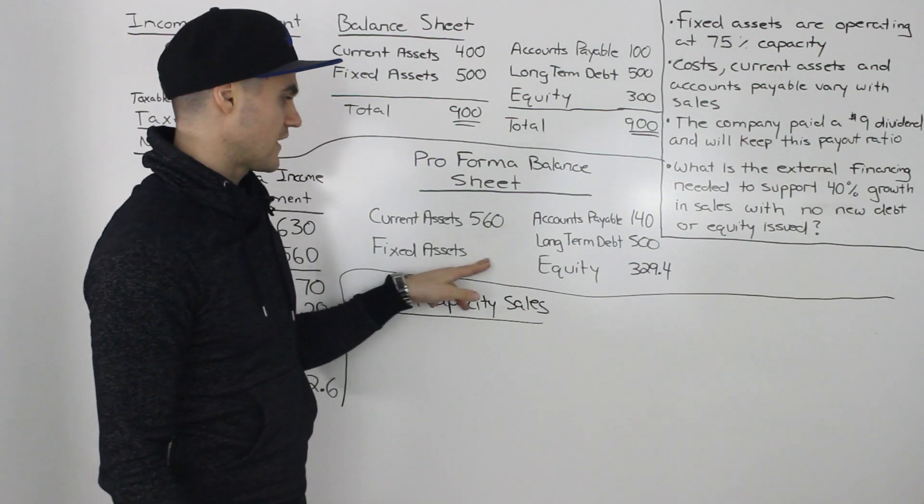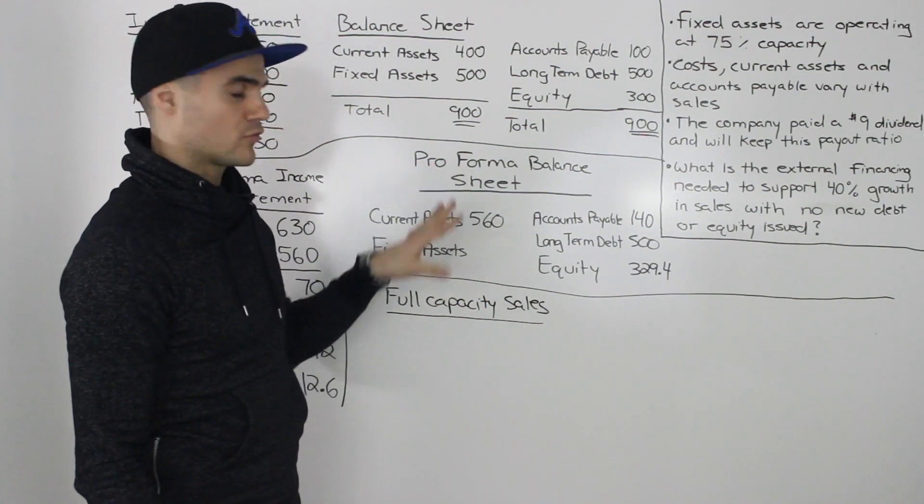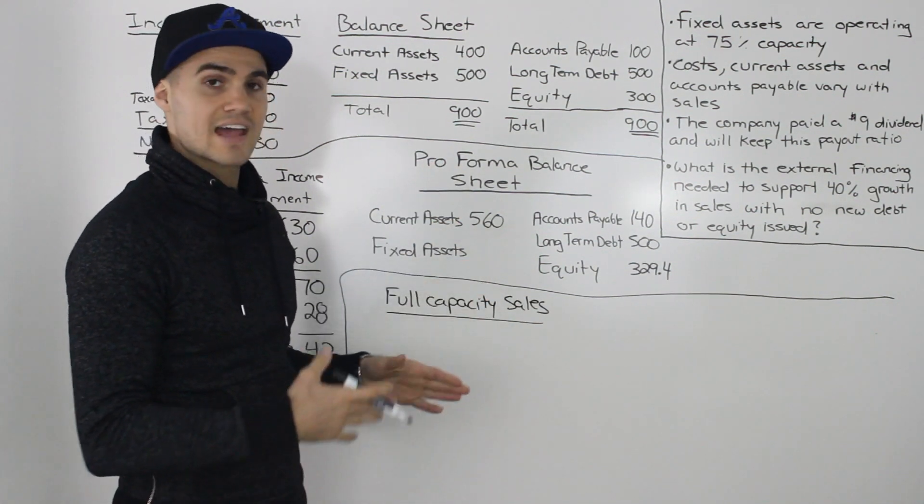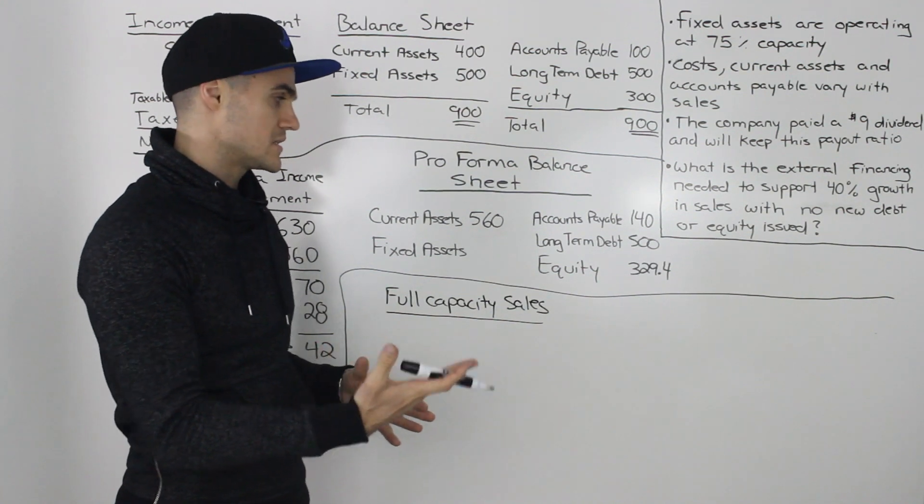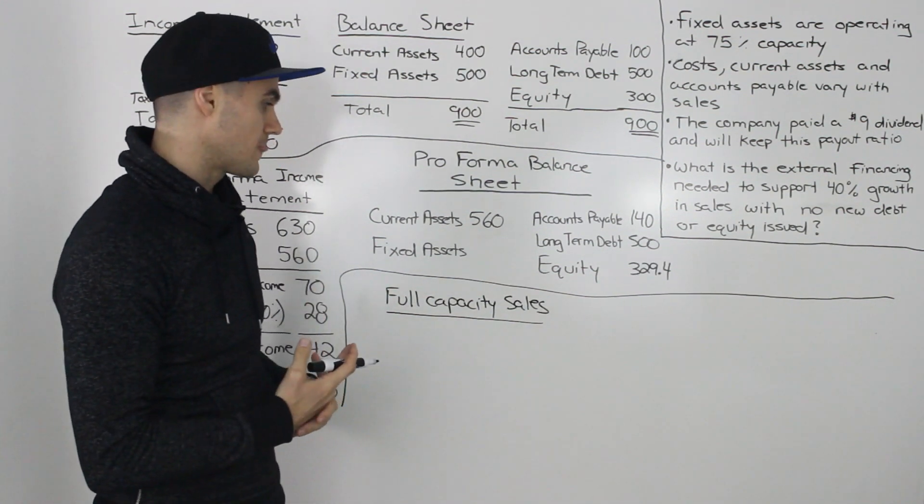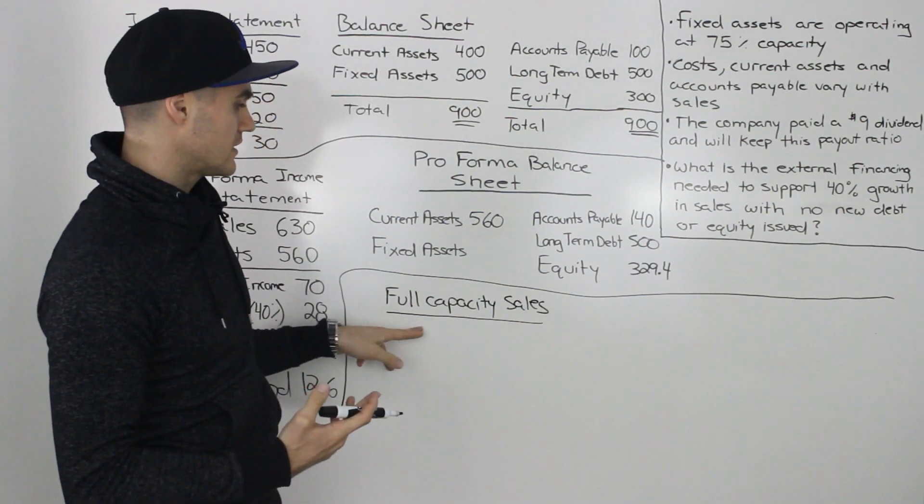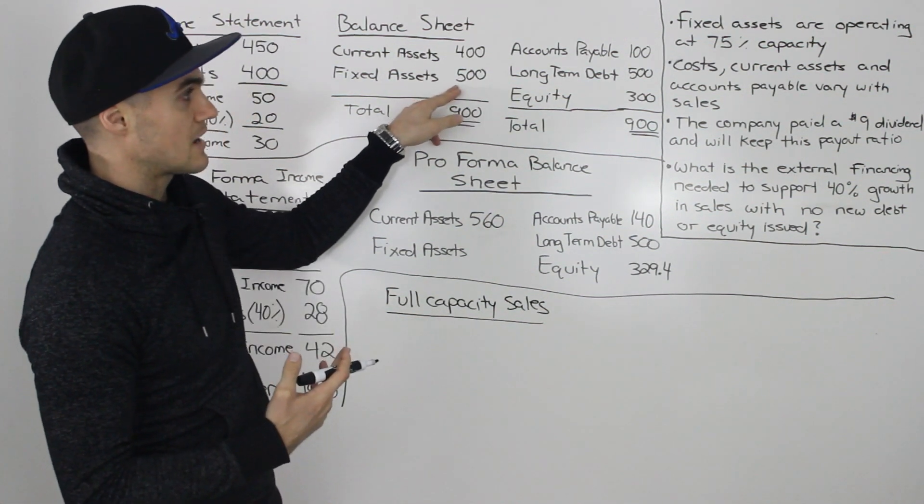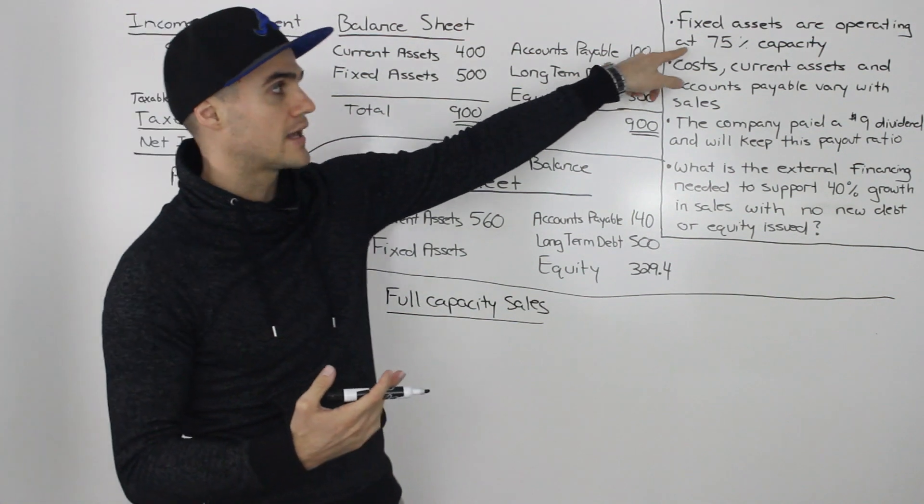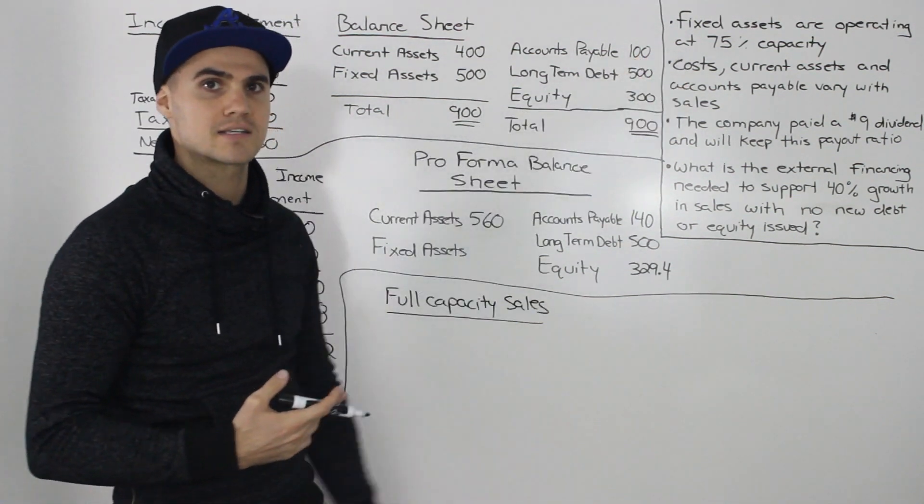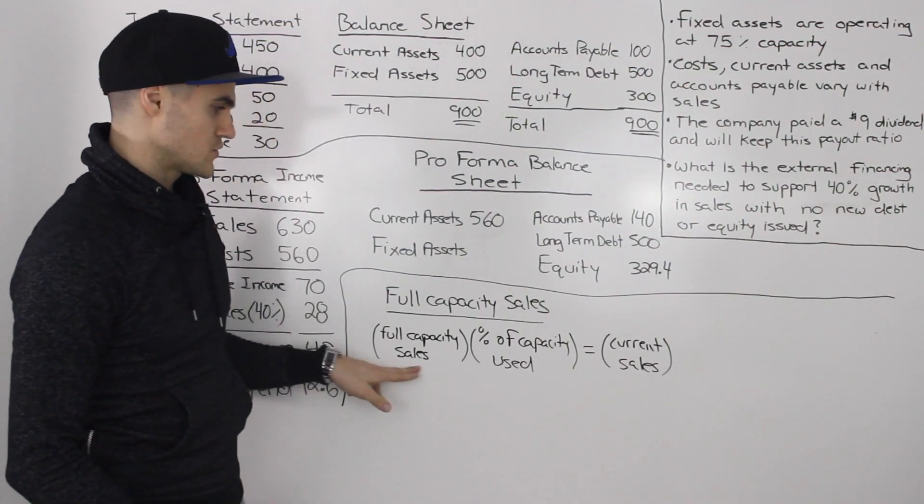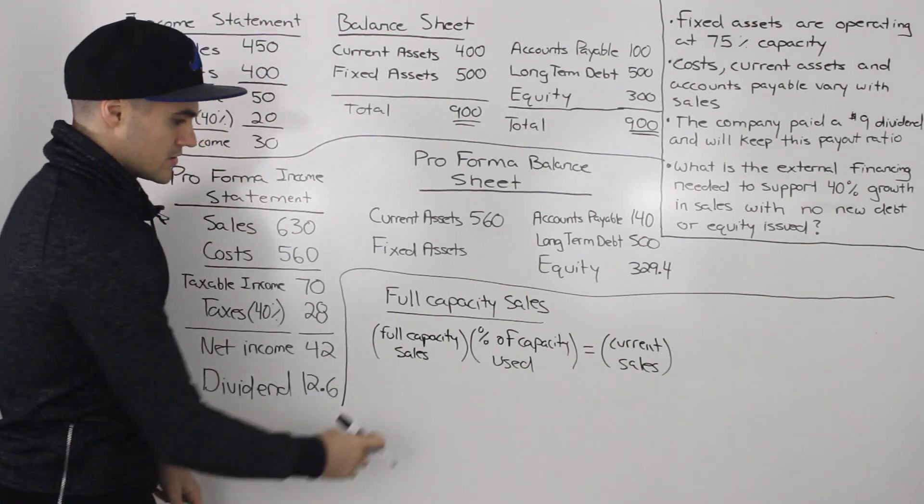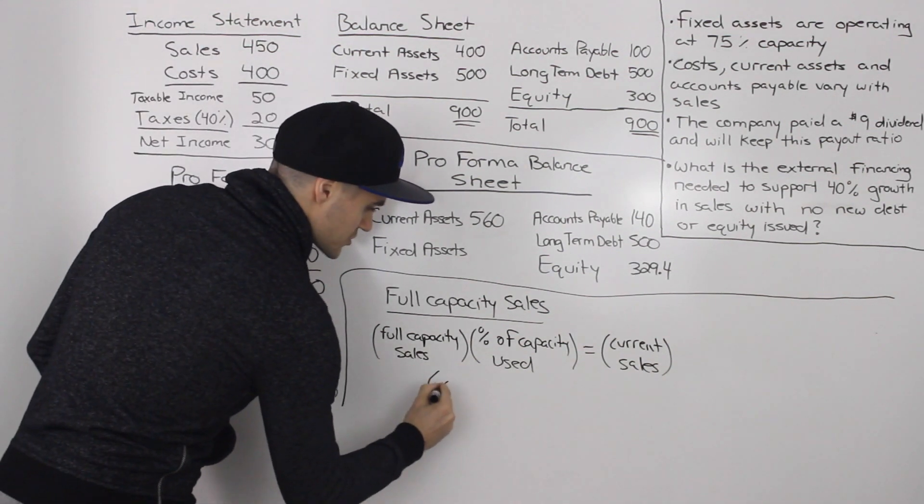And now to finally figure out that fixed assets amount on the pro forma balance sheet, it's actually the exact same process as we did in the previous example. So the first thing we have to find is we have to find the full capacity sales of these fixed assets that we have, because they're only operating at 75% capacity. So to find the full capacity sales, we would use this formula here. So the full capacity sales, that's what we're solving for.